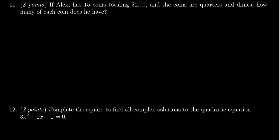In this video, we provide the solution to question number 11 from practice exam 2 for Math 1050, in which case Alexi has 15 coins and the total amount is $2.70. This coin jar only consists of quarters and dimes.